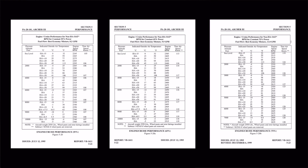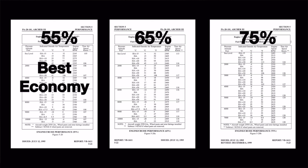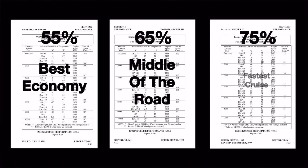The Archer provides us three sets of performance data: 55%, 65%, and 75%. So we have best economy, middle of the road, and fastest cruise. In this example, we'll use 75% power because we want to get down to Mason City quickly to have the most time to explore Clear Lake and the Buddy Holly historical sites.